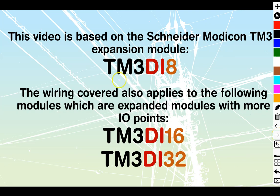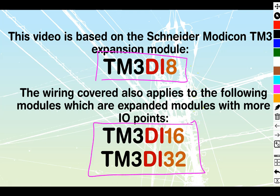So this video is specifically based around the TM3DI8, and that's the one we're going to see illustrated that we're going to draw our connections onto. However, it does also apply to these ones over here, the TM3 DI, standing for digital or discrete input, and then 16 or 32 referring to the number of I.O. points it has. So if you can understand what we do with this DI8, you'll just be able to scale that up to take a look at the 16 or 32.